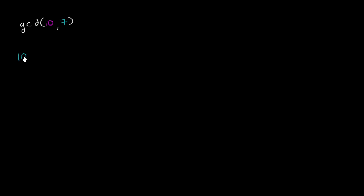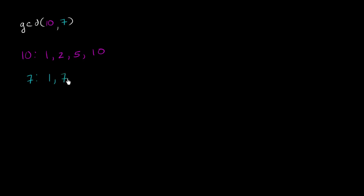So what is the largest factor of both? Well, take 10 — 10 can be expressed as 1 times 10, or 2 times 5. So 1, 2, 5, and 10 are all factors of 10, all divisors of 10. And sometimes this is called greatest common factor. For 7, what are all its factors? Well, 7 is prime — it only has two factors, 1 and itself. So what is the greatest common factor? There's only one common factor here: 1.